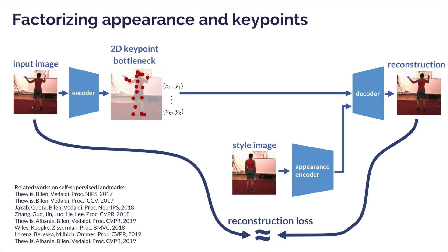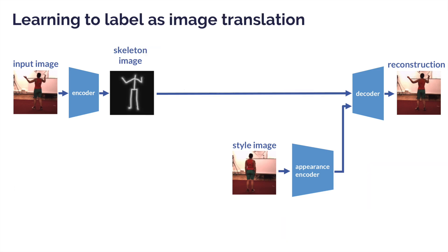A similar approach was used in other self-supervised works. However, the disadvantage is that the learned keypoint representation of the pose is not interpretable. This means that none of the points will, in general, correspond to landmarks such as the hand, knees, or ankles. We replace the pose representation with an image representation that allows us to use powerful image-to-image translation networks.